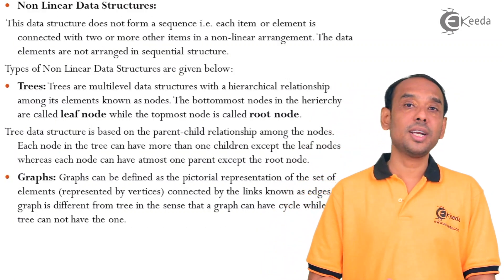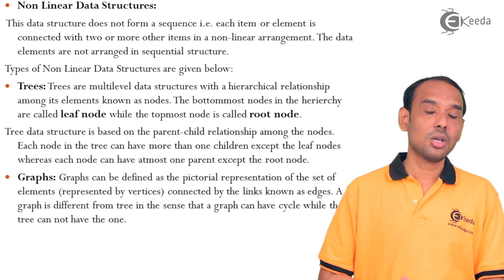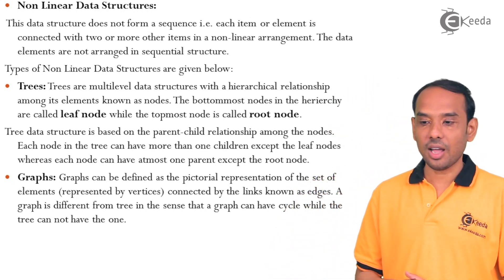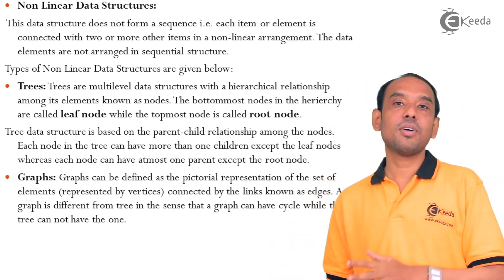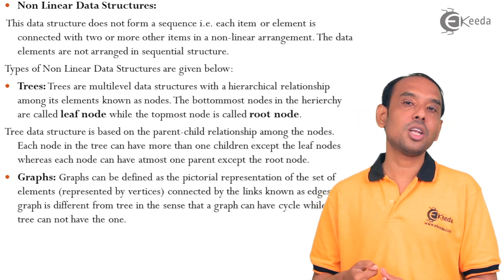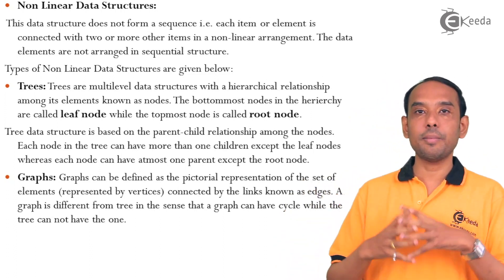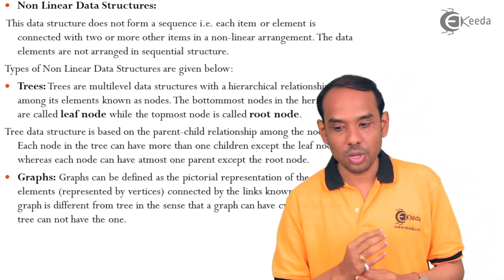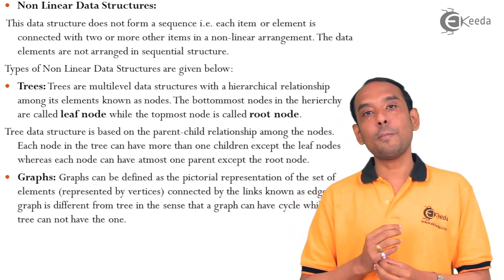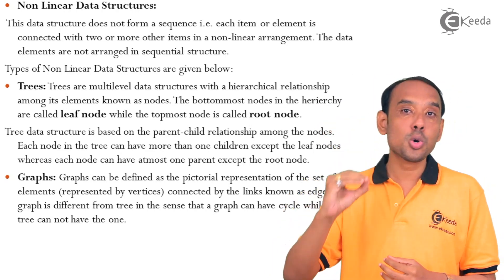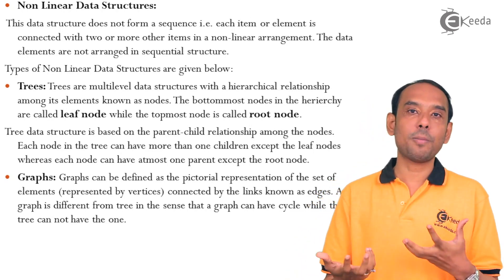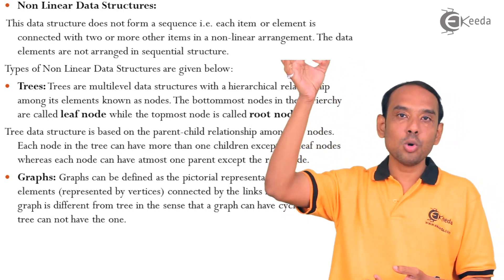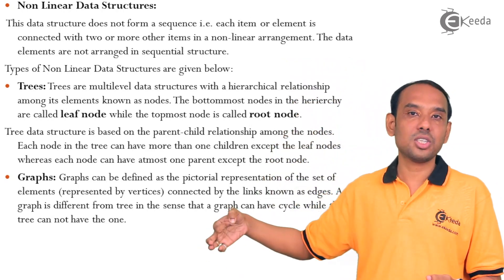The next data structures are nonlinear data structures, which have two parts: trees and graphs. Trees are multilevel data structures following hierarchical relationships among their elements. The topmost node is called the root node and the last nodes are called leaf nodes. It is like an upside-down tree, starting from the root and going out to the branches.